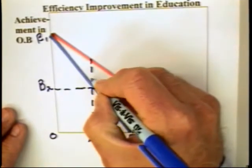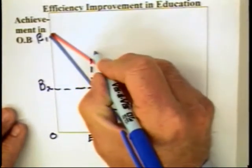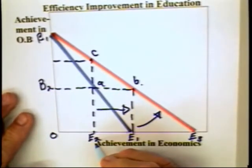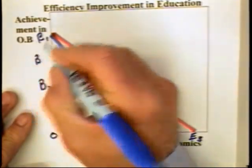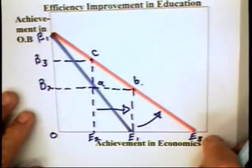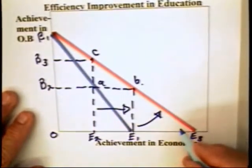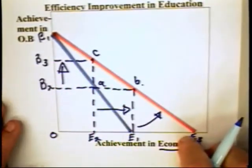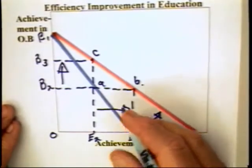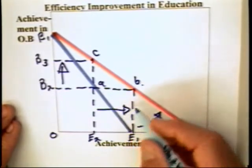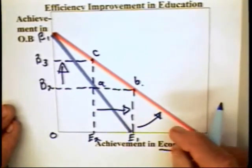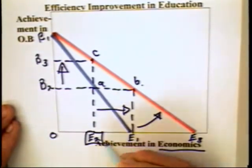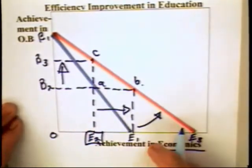But note that the student can also move from combination A to combination C — B3 — in which case the individual continues to learn E2 of economics and B3 of organizational behavior. That is, because of the technological improvement in the economics class, students are quite capable of learning more organizational behavior. Because students are better able to learn economics and can learn more economics in a given amount of time, the student can reduce the amount of time spent on economics, go back to the old achievement level, and apply the extra time to organizational behavior.